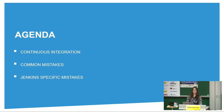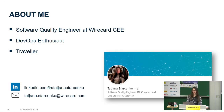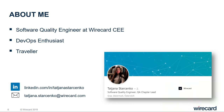In my talk today, I will talk about continuous integration, the common mistakes that can happen to you while using or configuring continuous integration, and I will talk a bit more about Jenkins, which is a continuous integration server, and how you can do wrong with Jenkins. I work at Wirecard as a software quality engineer, in a shop system team where we are developing plugins for different kinds of shop systems. I'm quite interested in DevOps and automation, and I also love traveling. I have lived and worked in multiple countries, and now I'm happy to be based here in Graz.